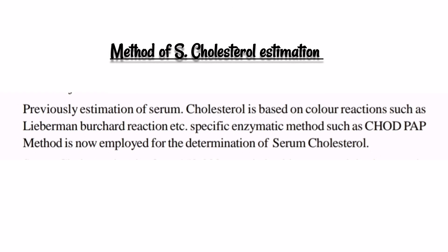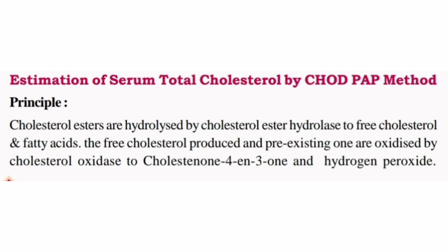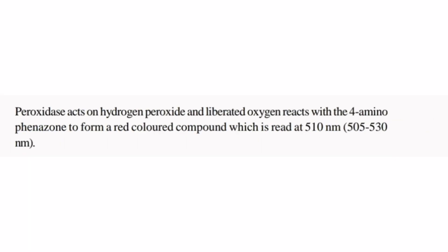You can estimate serum cholesterol using the Liebermann-Burchard reaction. Another method is the CHOD-PAP method for serum cholesterol estimation. The serum cholesterol is oxidized by cholesterol oxidase, and a 4-aminoantipyrine reactant forms a red-colored compound. That compound is measured at 510 nanometers.